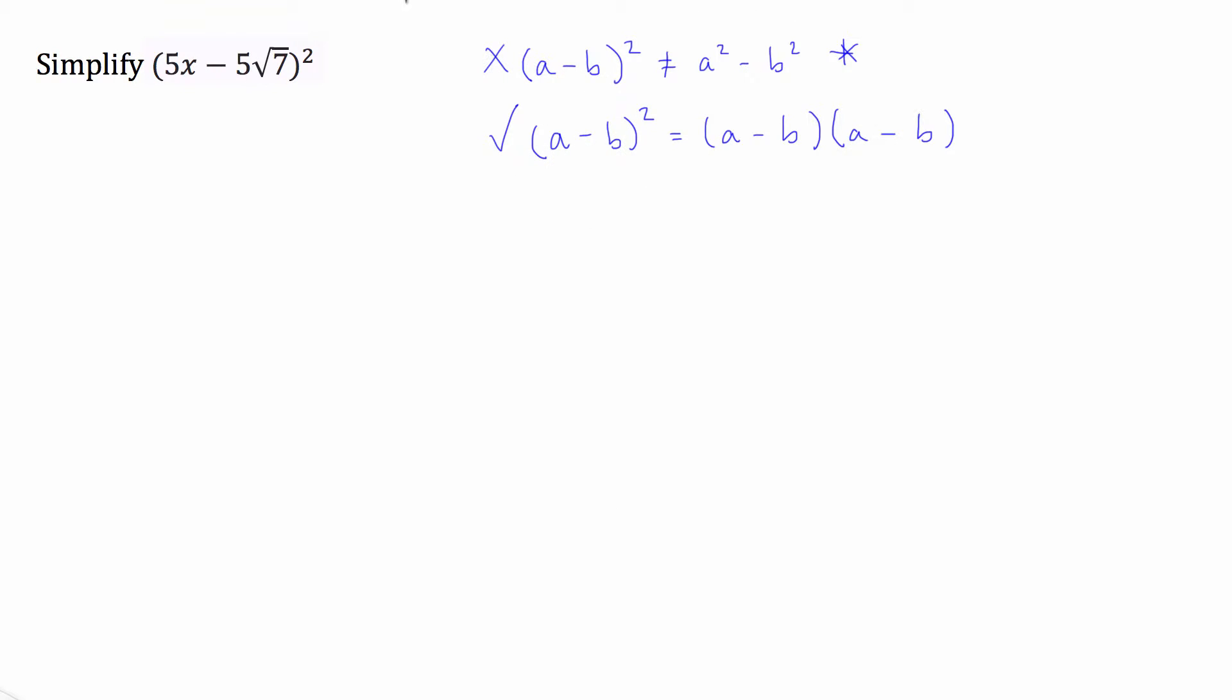So knowing this, we're going to write this down. We'll start with 5x minus 5 square root 7, then we have 5x minus 5 square root 7.